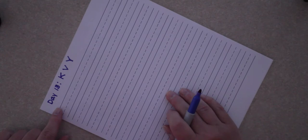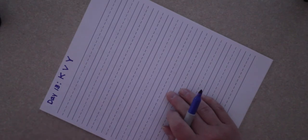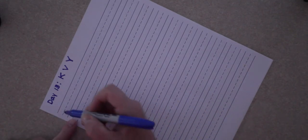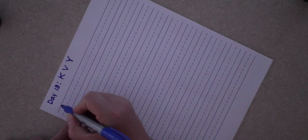Alright, so we're back for day 13 of our capital letters. Today we're going to learn capital K, capital V, and capital Y. Capital K starts a little bit below the top line, just like the letters we learned yesterday. It curves around and makes that cane shape like the beginning of the H.